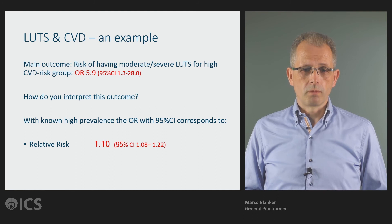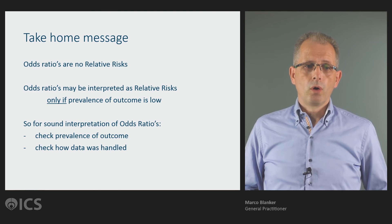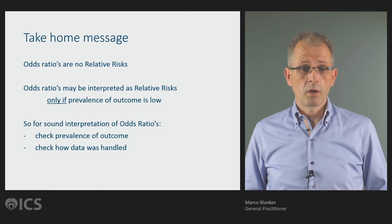So the most important messages are: odds ratios are not relative risks, and we should be aware of that when reading any manuscripts. Odds ratios may be interpreted as relative risks only if the prevalence of the outcome is low. Very often in study outcomes, the prevalence is high. For sound interpretation of an odds ratio, please check the prevalence of the outcome and check how the data was handled.